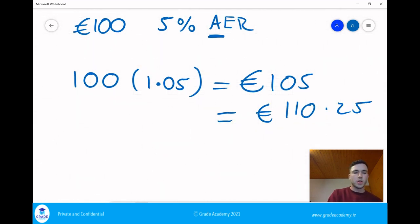Again we're taking the 105 and we're multiplying it by 1.05. That is the most important thing about compound interest. We always take the last figure in our account and we get the interest on that.